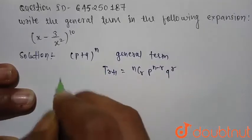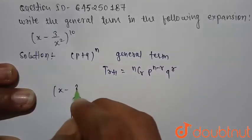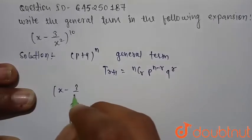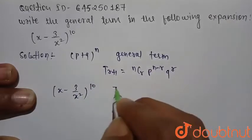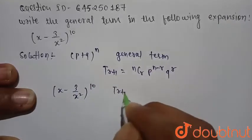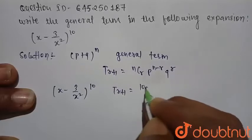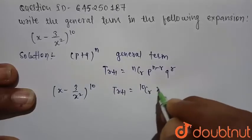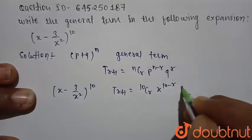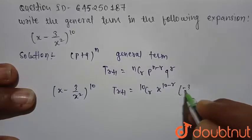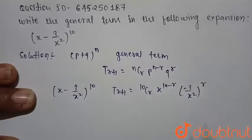Using this, we can write the general term of (x minus 3 divided by x squared) raised to power 10. So we write T(r+1) equal to 10Cr times x raised to power (10 minus r) and (minus 3 divided by x squared) raised to power r.